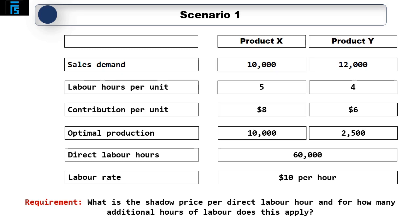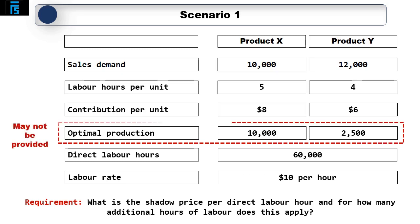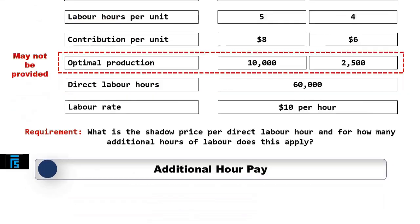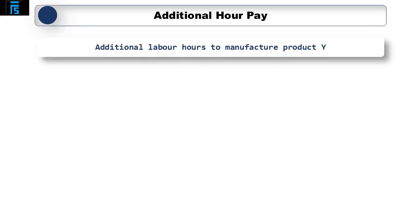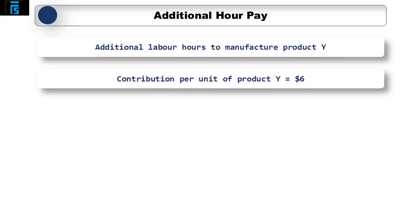Usually in this type of question, we would be required to calculate the optimal production plan, but in this scenario it has already been given to us. Make sure that you are able to calculate this yourself — if you have trouble, please go back and re-look at the video on limiting factors. Let's now consider what would happen if one additional labour hour were available to purchase — in other words, what would we pay as an overtime rate? Because we have met the demand of X in the optimal production plan, the company would use any additional labour hours to manufacture product Y. There is no need to produce any additional product X.